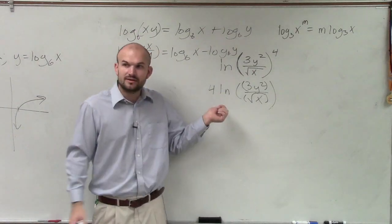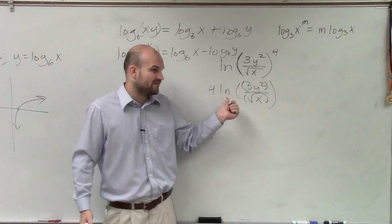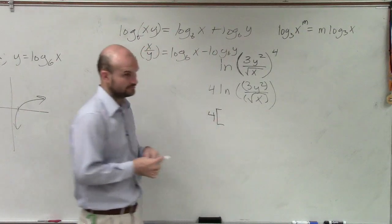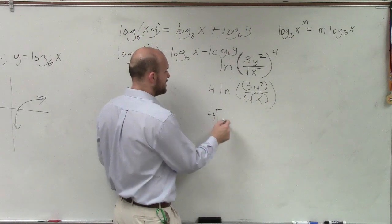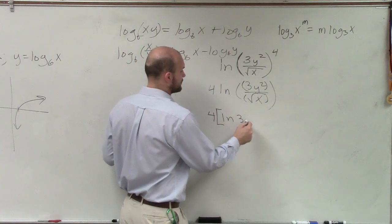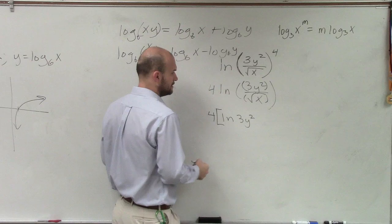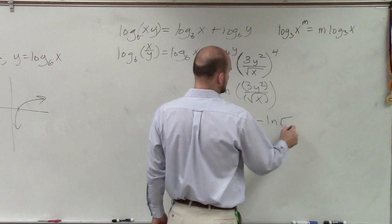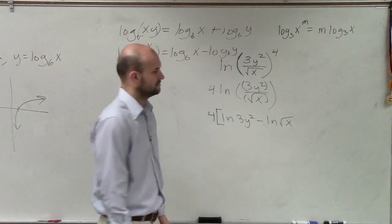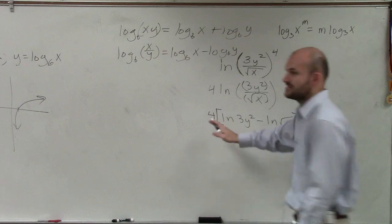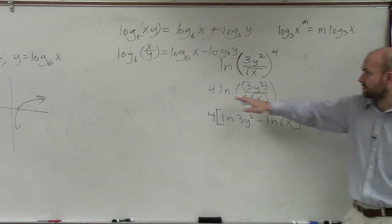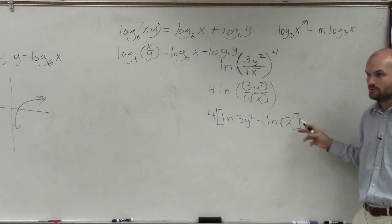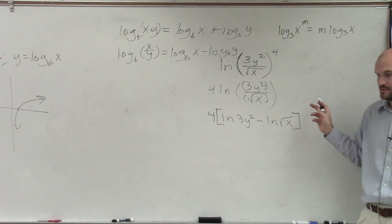Now when I break it up, though, you remember this is always being multiplied by 4. So what I'm going to now include is a bracket. So once I include my bracket, now I have ln of 3y squared minus ln of the square root of x, end bracket. Because that 4 is being multiplied by everything. Just because I'm breaking this apart, that 4 is still being multiplied by everything, or that 4 is being raised up to the power.